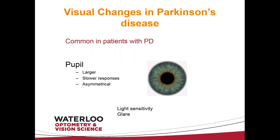The pupil can also be affected in Parkinson's disease. Generally it is larger and slower to respond, and may be asymmetrical — one pupil bigger than the other. A larger pupil lets in more light, so you may find increased light sensitivity or glare. The slower response means that when a bright light suddenly appears, it takes longer for the pupil to respond, causing further light sensitivity.